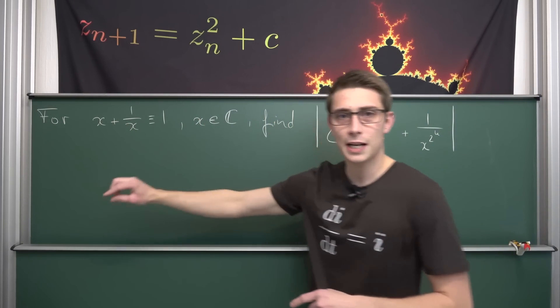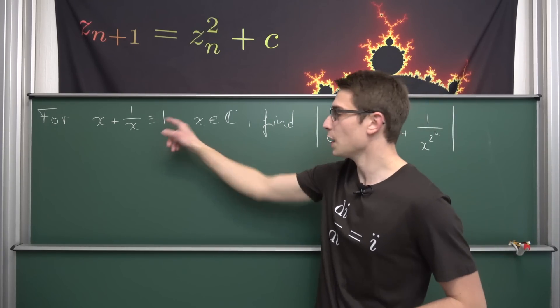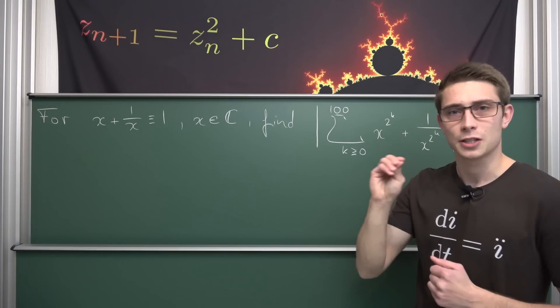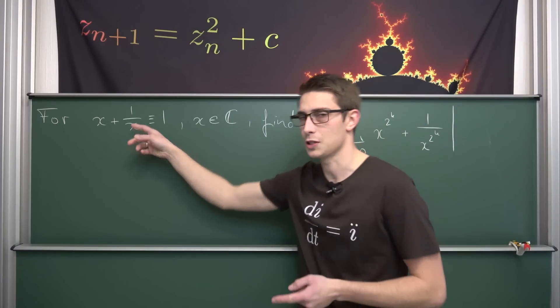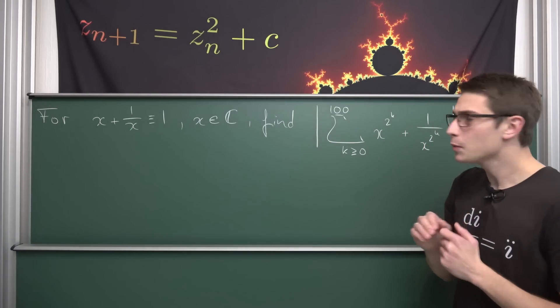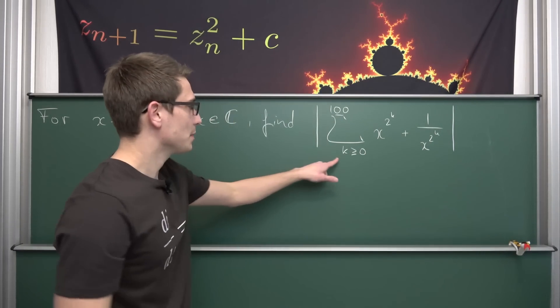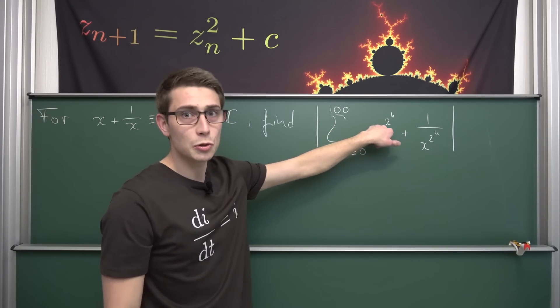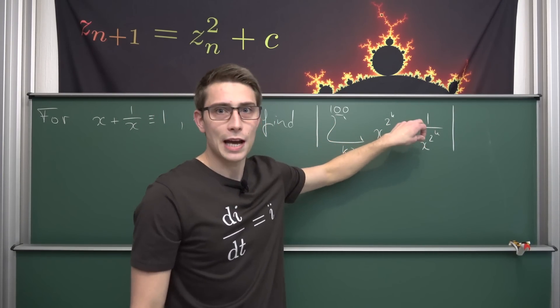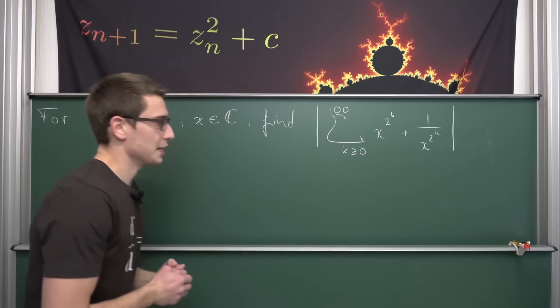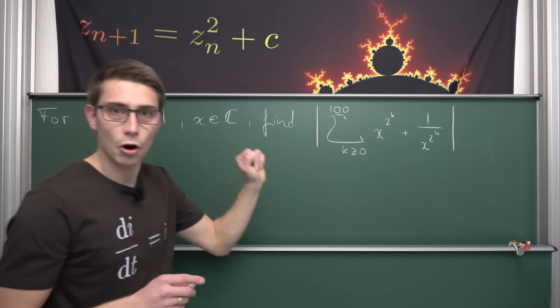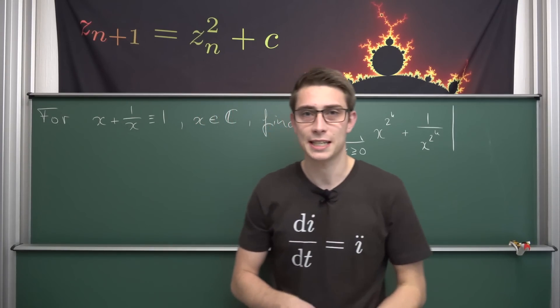We have x plus 1 over x being defined as equal to 1, where x is an element of the complex numbers but not identically equal to 0, because otherwise you would divide by 0. And now we want to find the absolute value of this summation from k equals 0 to 100 of x to the 2 to the kth power plus 1 over x to the 2 to the kth power. This is what we are going to find out today.